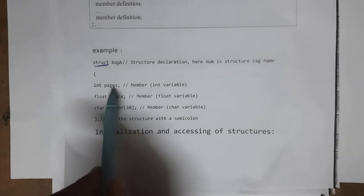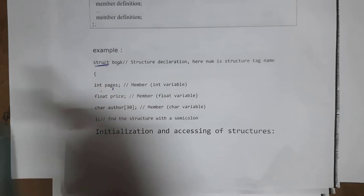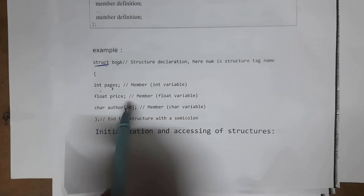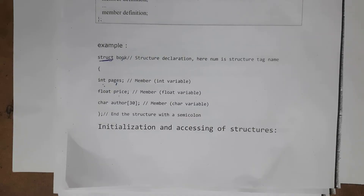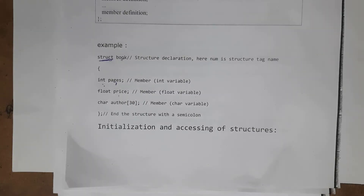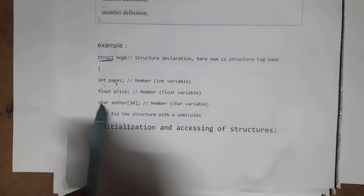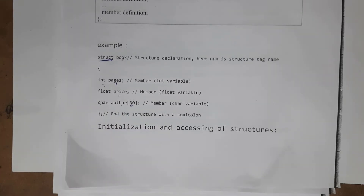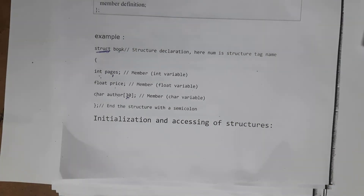Inside the curly brackets I written: int pages, float price, char author[30]. Here 'pages' is the variable name and 'int' is the data type. By using structures we can store variables of different data types in one place. Pages stores integers like 10 or 20, price stores floats like 10.5 or 10.23, and author stores up to 30 characters maximum.